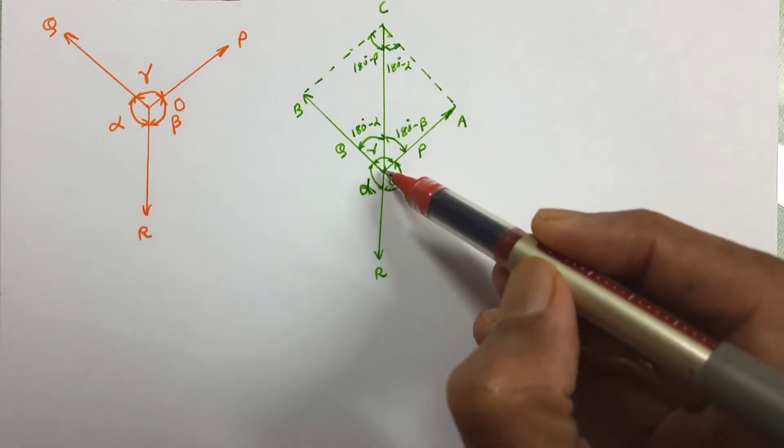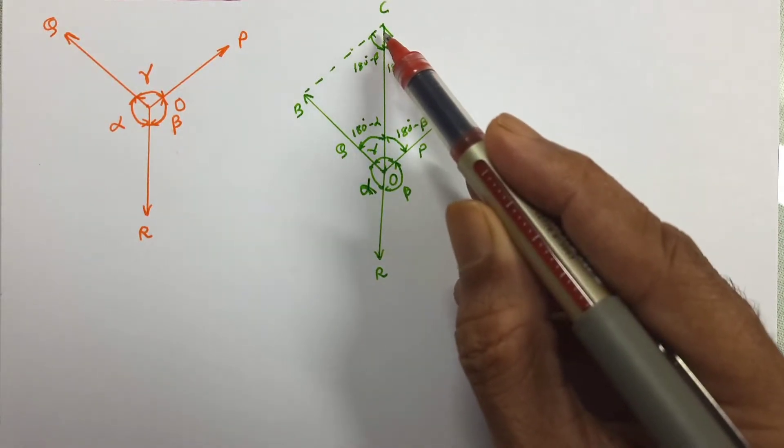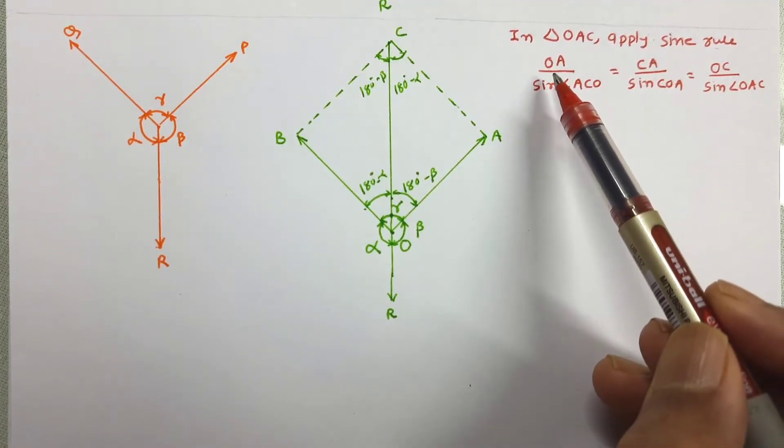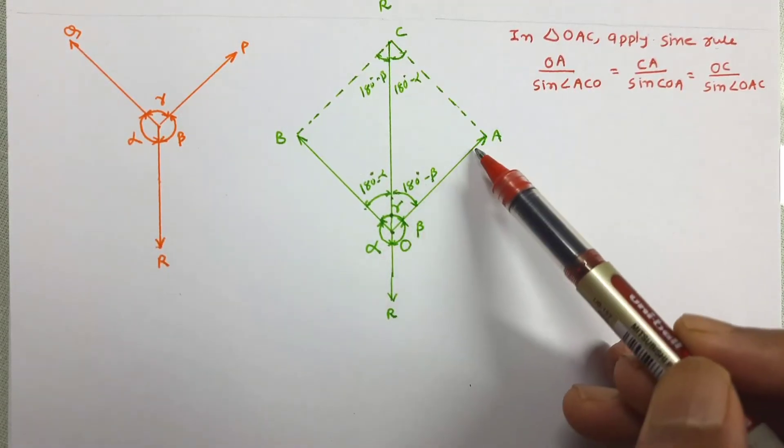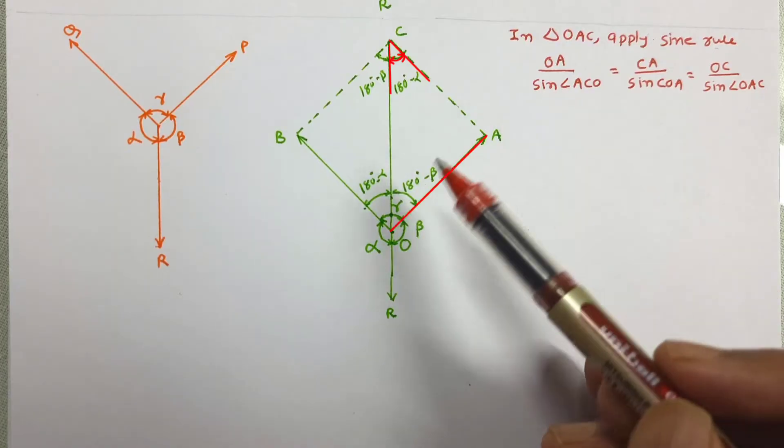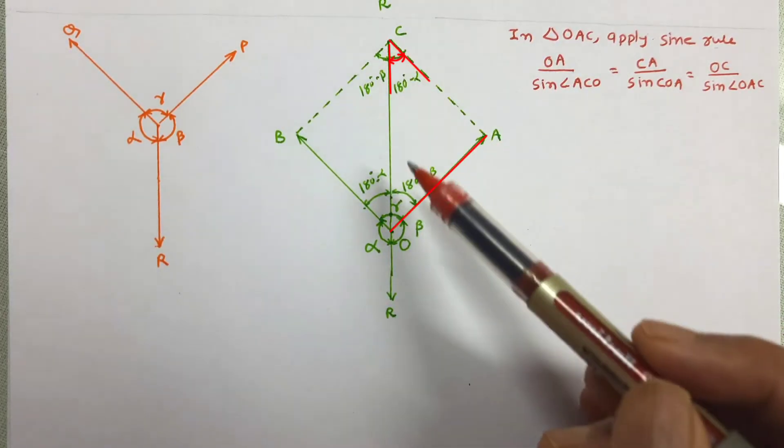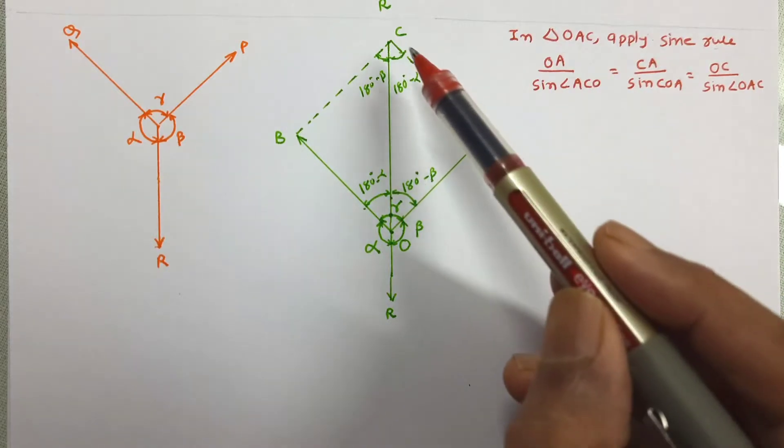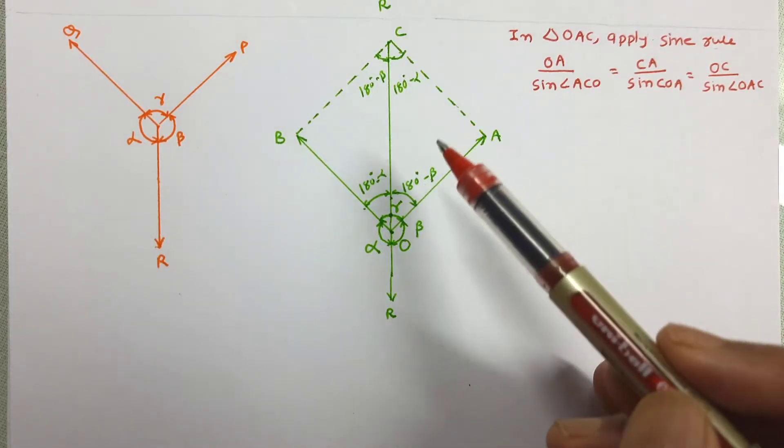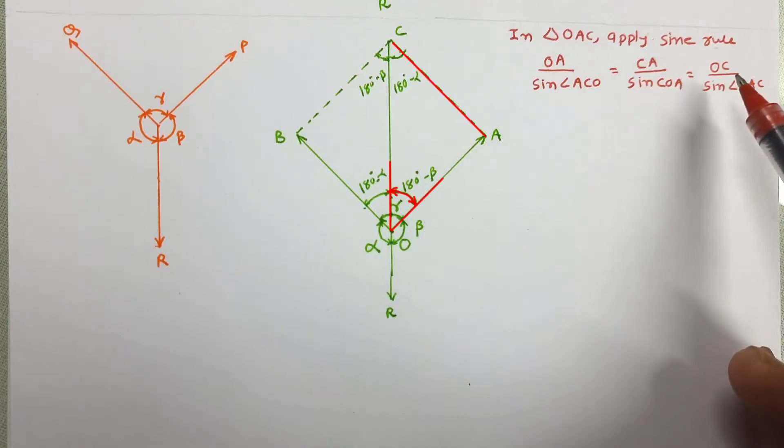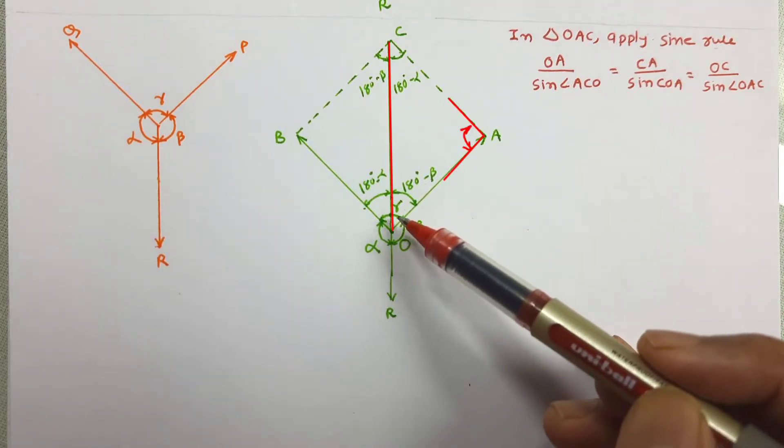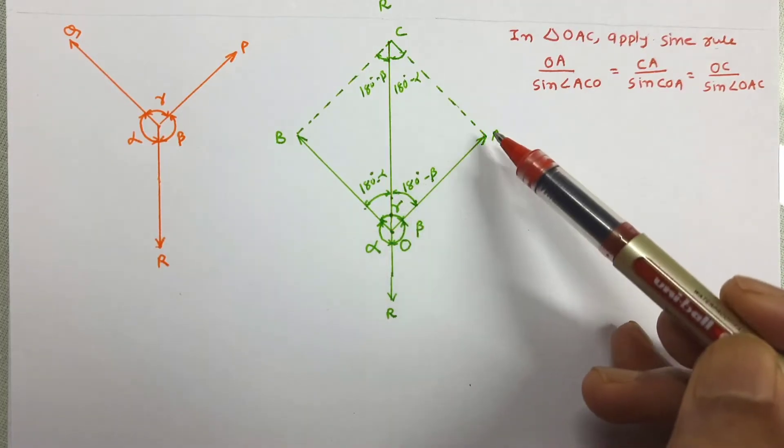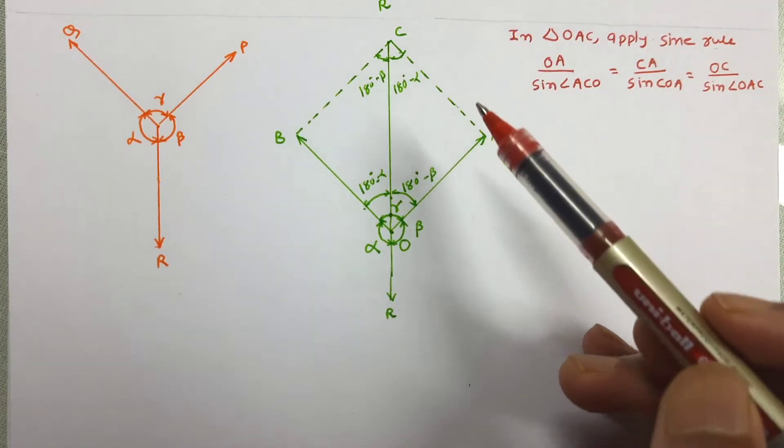Now let us complete this triangle OAC and apply the sine rule. So according to sine rule, OA divided by sine ACO. This ratio will be equal to CA upon sine COA and OAC, that is divided by sine OAC. Now here, let us apply geometry and work out all these three angles.